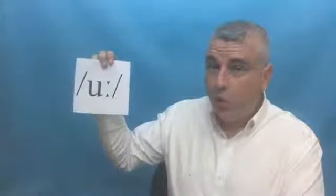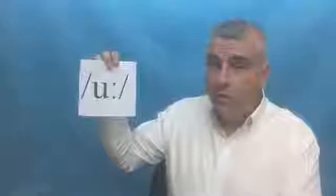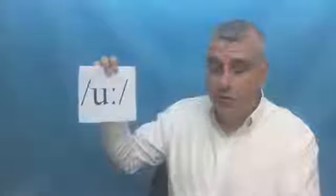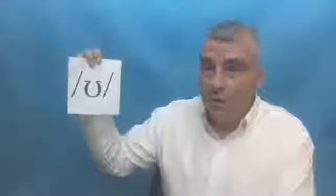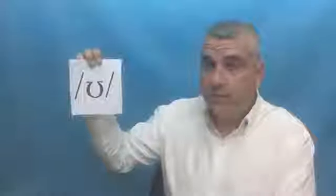Let's get started with the lesson, shall we? Our first sound is OO — as in 'room.' Can you say it? OO. Good. And our second sound is OO — as in 'book.' Can you say it? OO. For both of these sounds, our lips are going to be rounded a little bit.